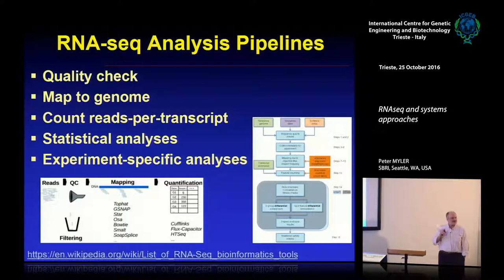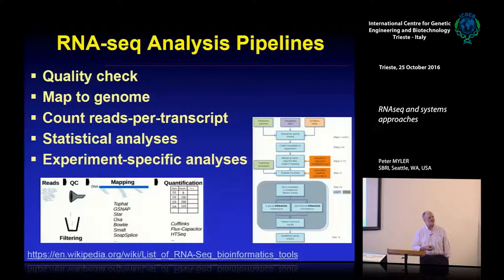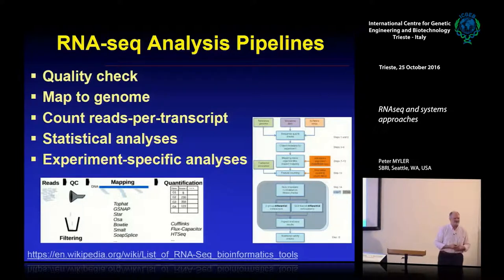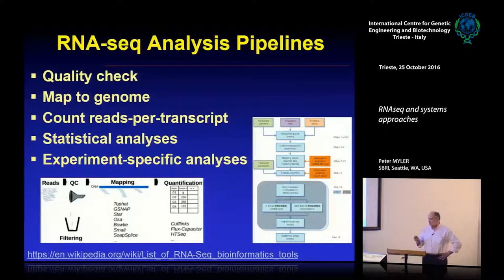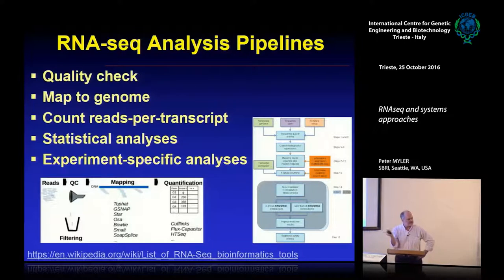After sequencing — making the library and sequencing is the easy part — what do you do with your sequence? You'll probably get 20 to 30 gigabytes of sequence per sample, so pretty soon you'll have a terabyte on your computer. A typical pipeline looks like this: quality check the sample, map it to the genome, count the number of reads per transcript, do statistical analyses, and then experiment-specific analyses.